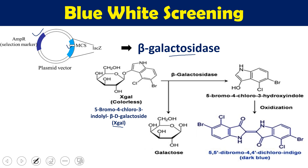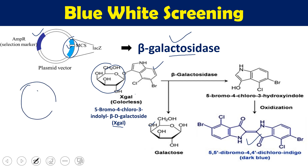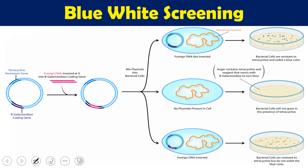If the beta-galactosidase enzyme is produced by a bacterial plasmid and the gene is intact, it will metabolize X-gal. The galactoside component will be separated and the remaining fragment, 5-bromo-4-chloro-3-hydroxyindolyl, will be dimerized and ultimately give us blue color. So if a bacterial cell has a plasmid where the lac-Z gene is intact with no insertion, it gives blue color; if a gene of interest is inserted, beta-galactosidase will not be produced and the colony will be white.